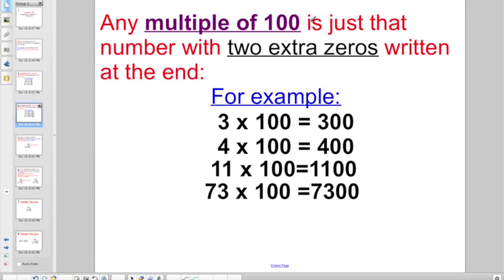Any multiple of 100 is just that number written with two extra zeros. Same thing, 3 times 100, 3 with two zeros on the end for 300. 4 with two zeros on the end for 400. 11 times 100, picture in your mind 11 with two zeros on the end, making it 1100. Or 73 times 100, picture in your mind 73 with two extra zeros, making 7300.